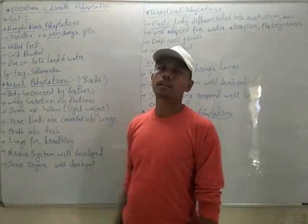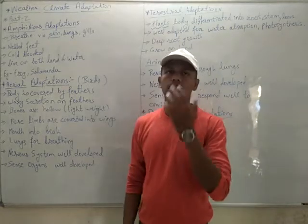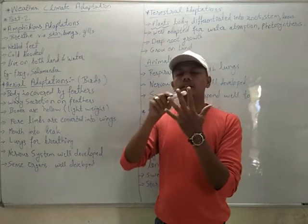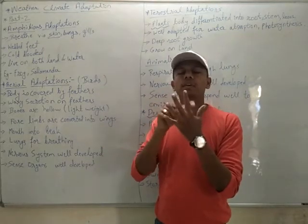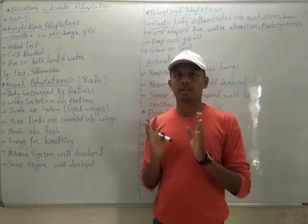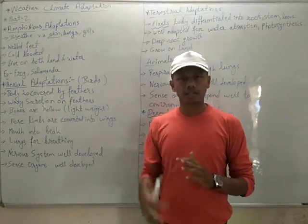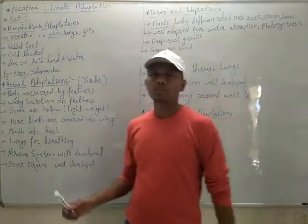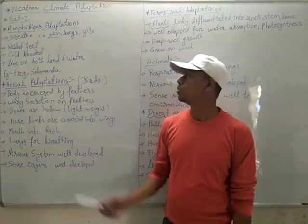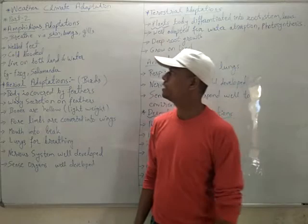The next character seen in amphibious organisms is web feet. There is a skin folding in between the finger-like structures of the feet. This acts as a paddle and helps the organism swim faster in the water. Because of the paddling paddle-like structure, this is called web feet.